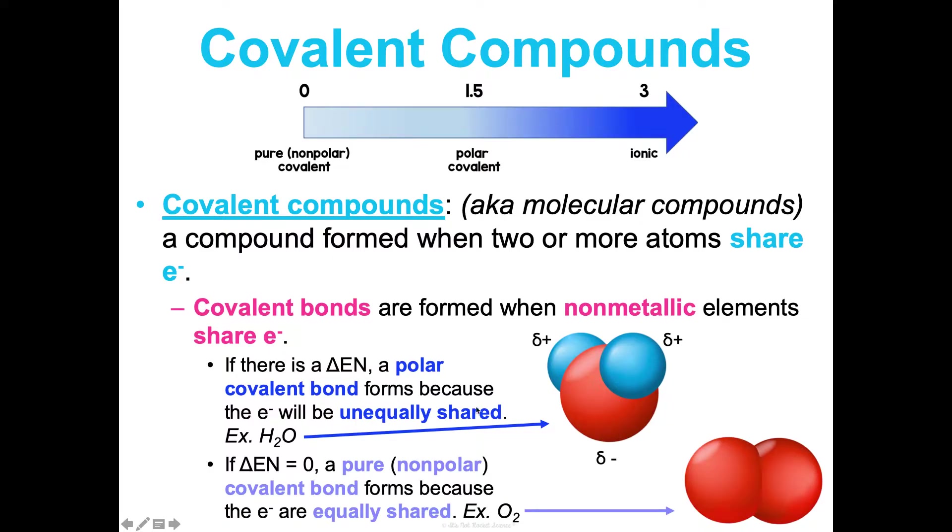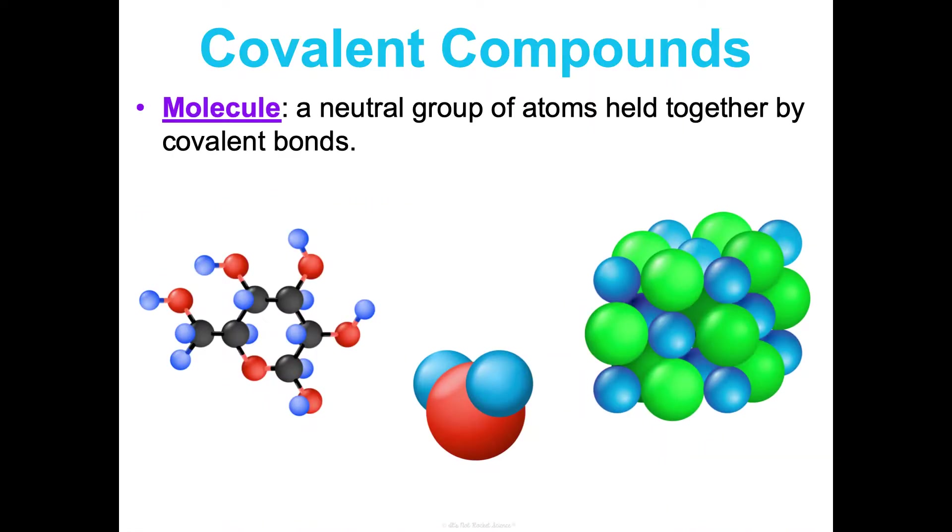This is different than when the difference in electronegativity is zero. That indicates a pure non-polar covalent bond because the electrons are equally shared. Here's an example between two oxygen atoms that make O2. Notice we have none of the deltas, none of the partial charges, none of the poles indicated because there aren't poles. They share these perfectly equally.